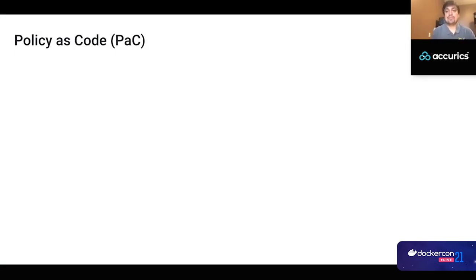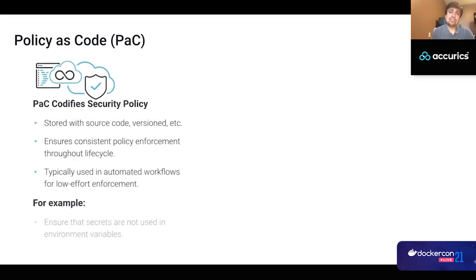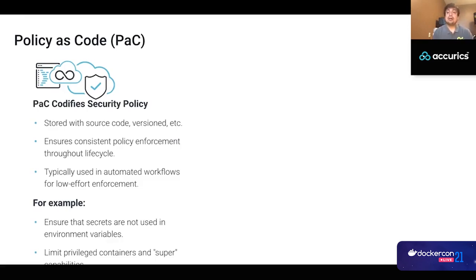What is policy as code? Policy as code is a method to codify policies you want to enforce across your development lifecycle. It ensures consistency from a policy enforcement point of view and is well-suited for automated workflows, providing low-effort enforcement. For example, you can ensure secrets are not used in environment variables, check whether you're limiting privileges, and verify whether super-user capabilities are being passed to your container images.